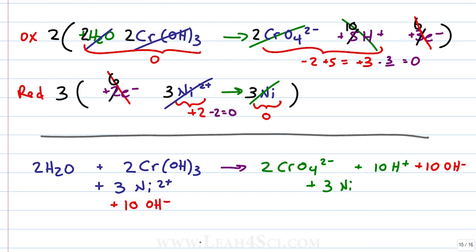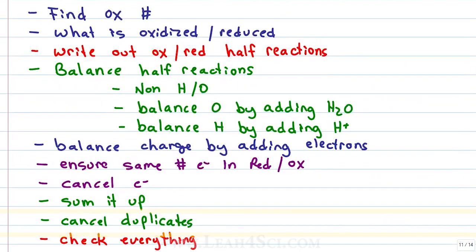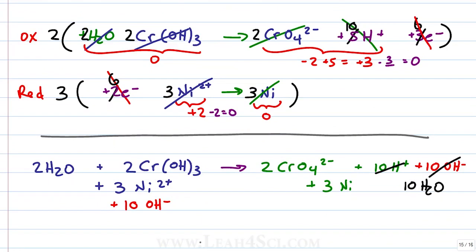Now, 10H+ and 10 OH- is actually 10 waters, so let's combine them. And this is where our note to cancel duplicates comes into play because look at what you have.